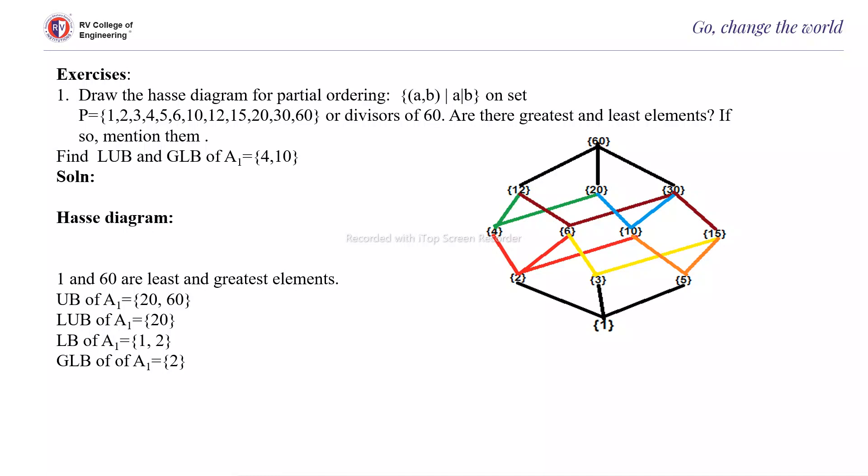On this set P = {1, 2, 3, 4, 5, 6, 10, 12, 15, 20, 30, 60}, which are the divisors of 60. If they give divisors of 60, you have to first write this set and then do the partial ordering relation on that.